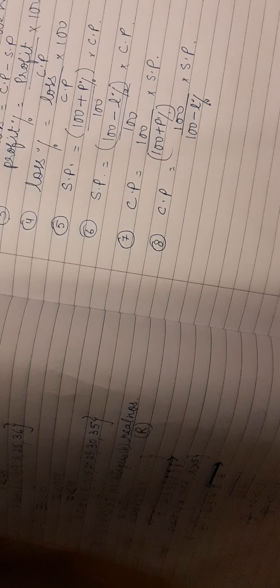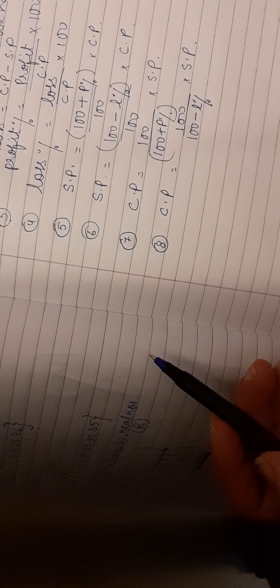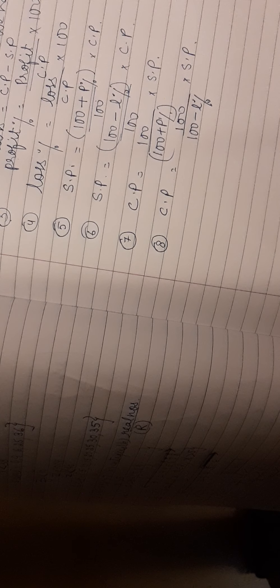When you are going to do any question of the exercise, first you have to write the formula and then do the question. Wherever the formula is required, you have to write it there, because marks are kept for that also. Now I am starting with the first question of exercise 8a. The first question says: a person purchased a chair for Rs. 700.